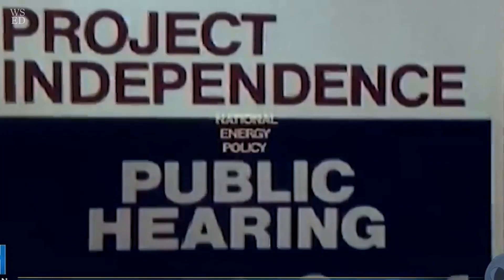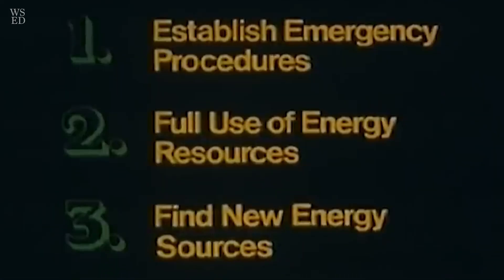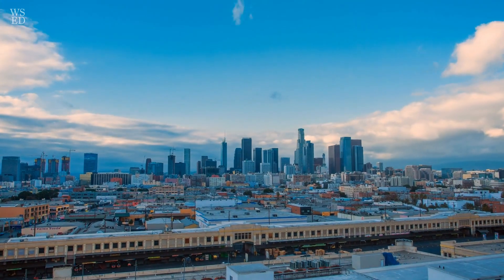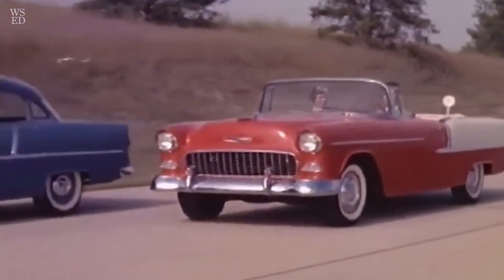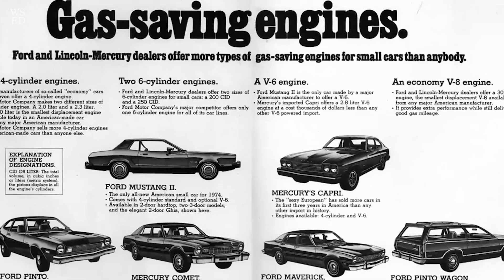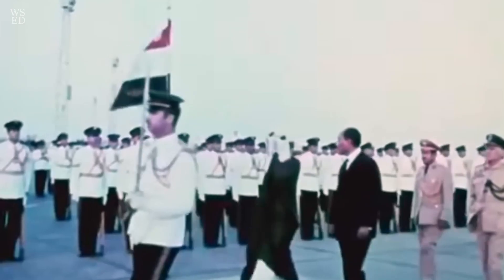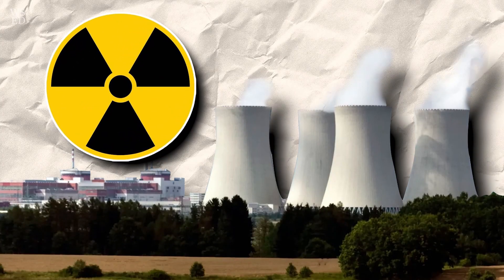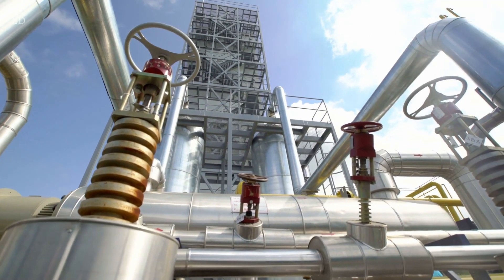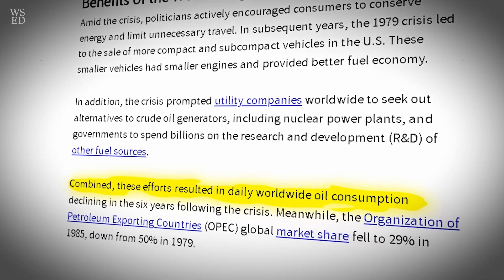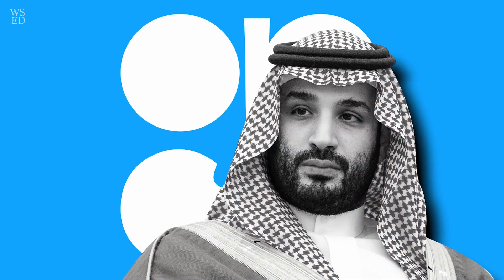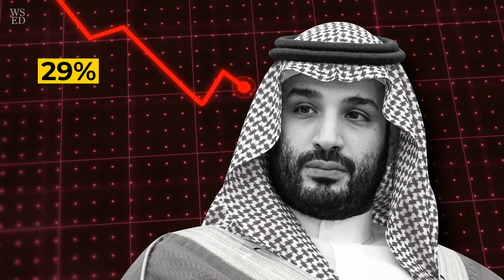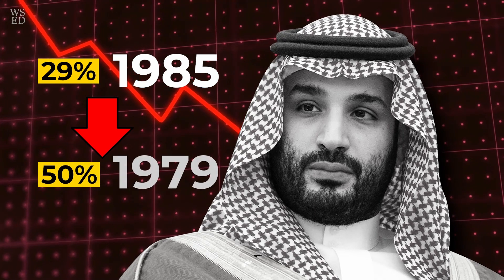In the face of the crisis, politicians actively called on consumers to save energy and limit unnecessary travel. In the years that followed, the 1979 crisis led to the sale of more compact and fuel-efficient cars in the U.S., with smaller engines and better fuel economy. The crisis also spurred utility companies around the world to look for alternatives to crude oil generators, including nuclear power plants, and governments to spend billions on research and development of other fuel sources. Collectively, these efforts led to a reduction in daily oil consumption worldwide for six years following the crisis, and OPEC's share of the world market fell to 29% in 1985, compared to 50% in 1979.